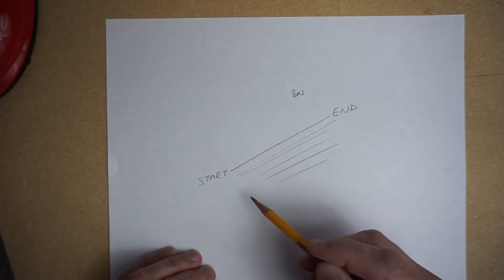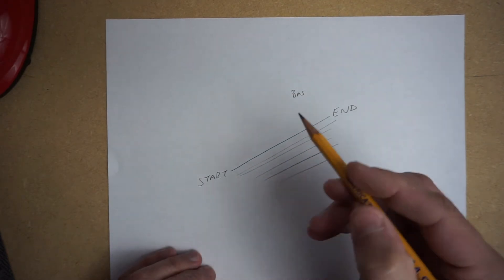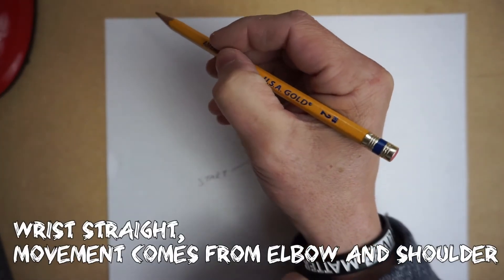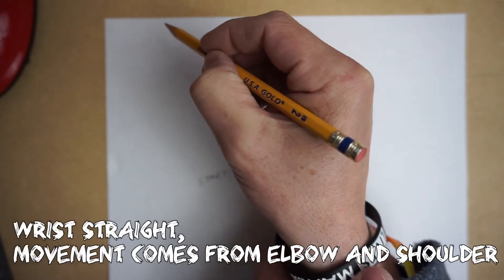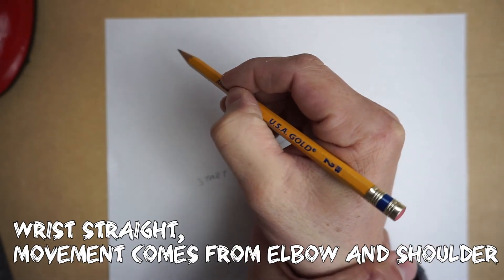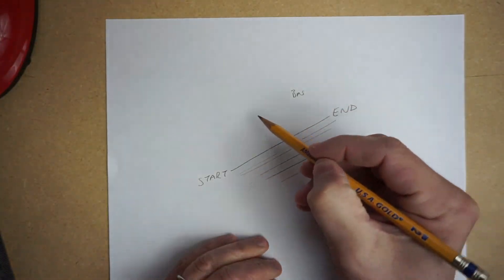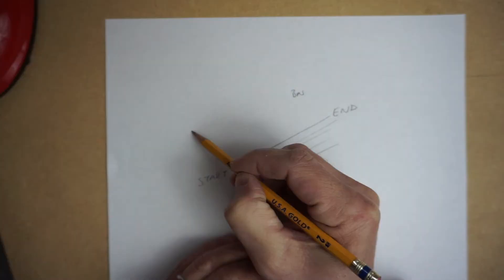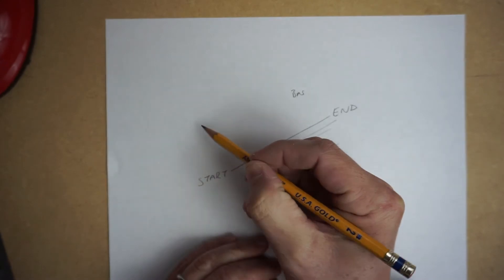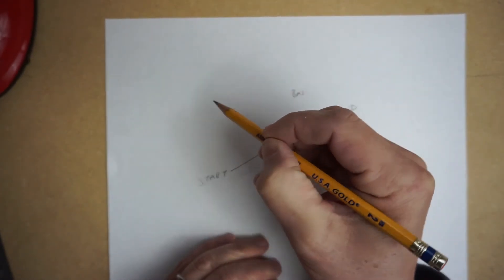Then the next thing is keep your wrist straight. Okay, this is really really important. You keep your wrist straight and you let your movement come from your elbows and from your shoulders. Okay, kind of like a robot arm.